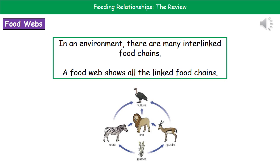Within any given habitat, there isn't just one food chain — there are lots of different food chains that link together. In order to show this interlinking of all the different food chains, we can create something called a food web.